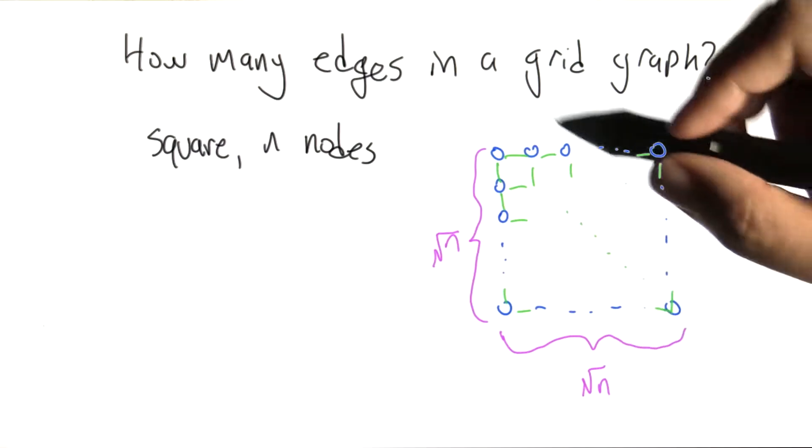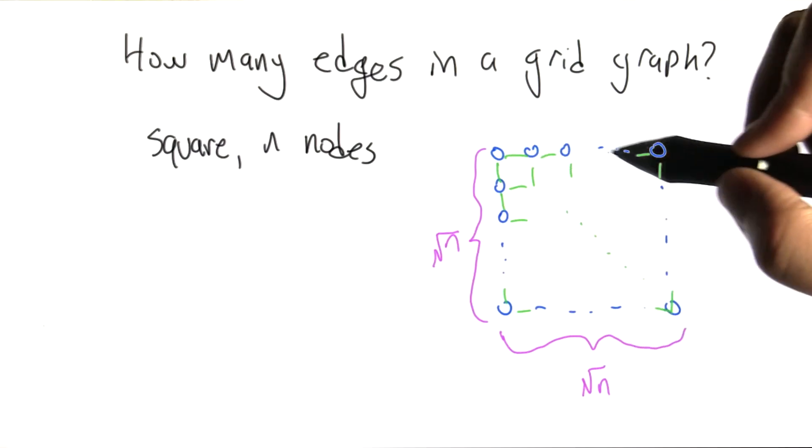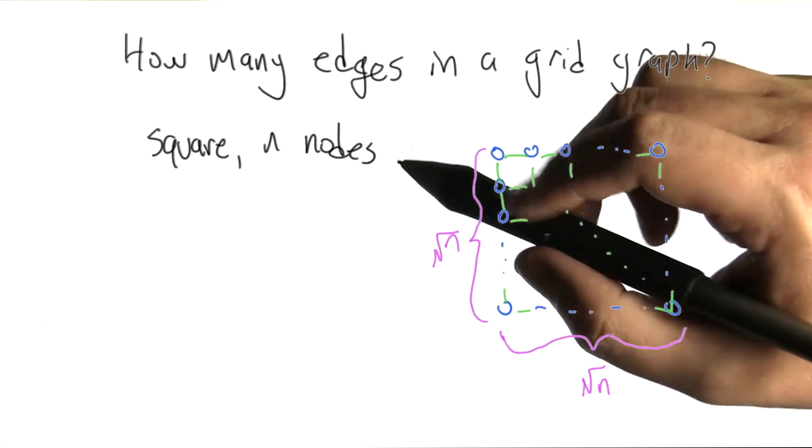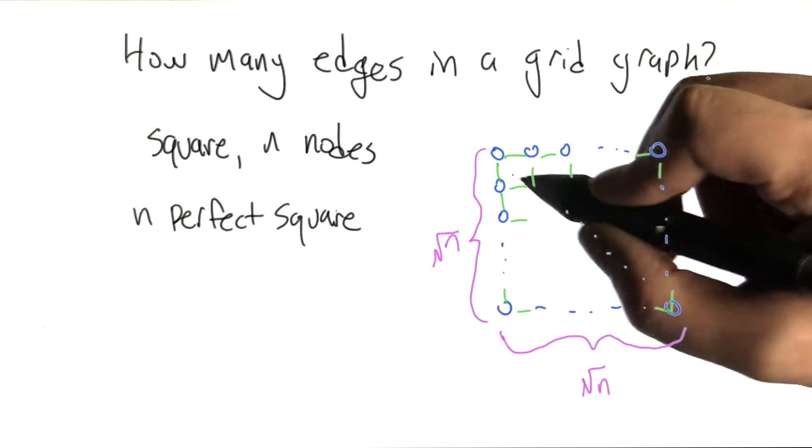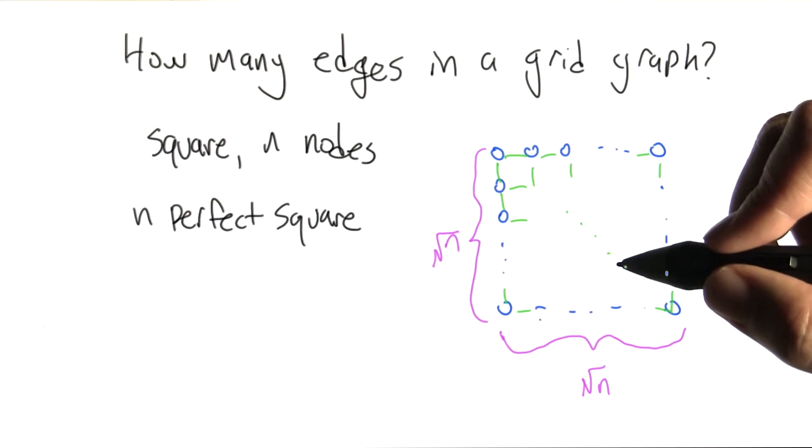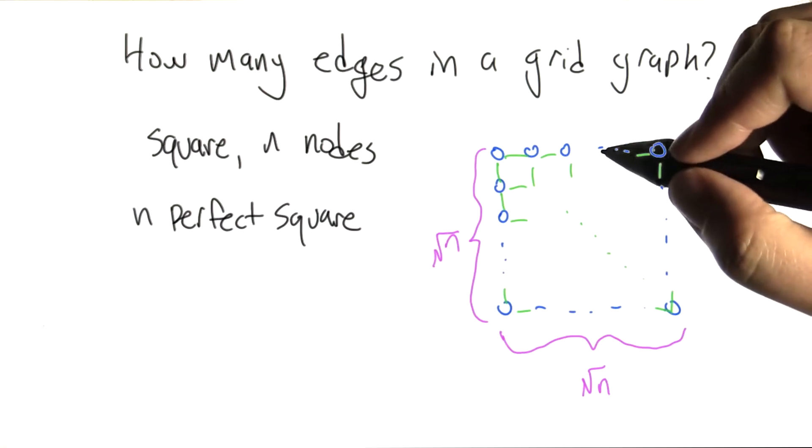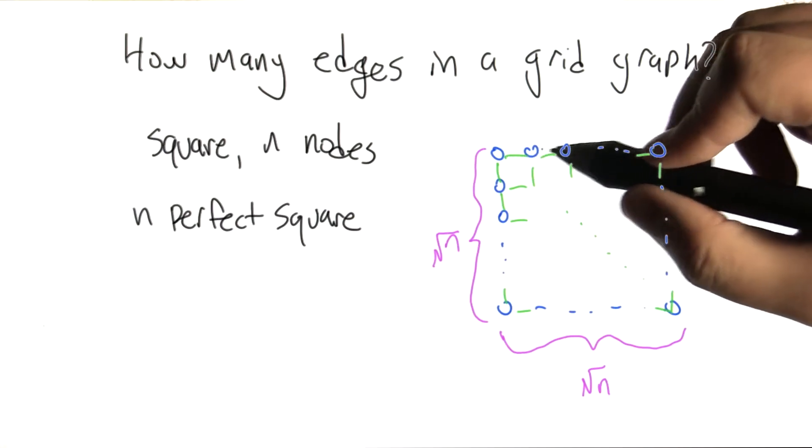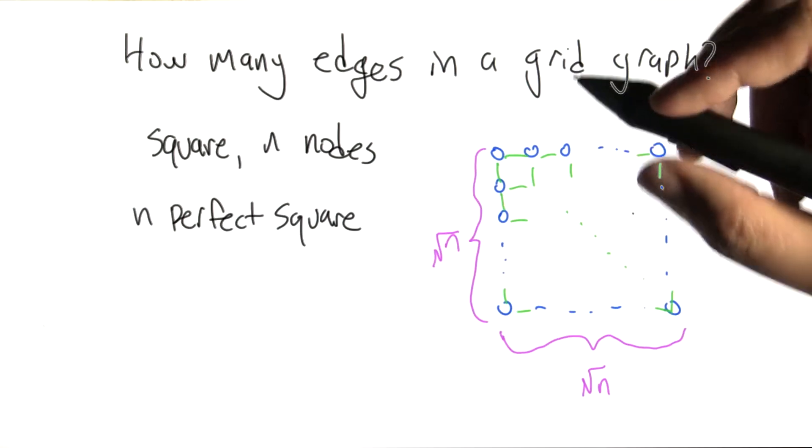So the picture of that looks like this, where you have nodes arranged in a square. For this to make sense, we're assuming that n is a perfect square so that we can actually arrange the nodes and form a square as so. So there's root n nodes on each of the sides. And if we fill in the edges, these green edges, what's the total amount that we get?